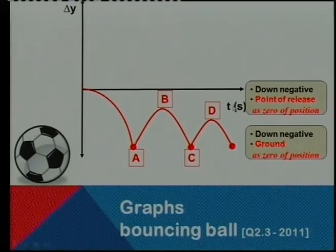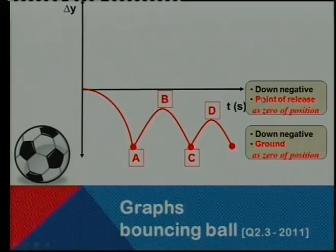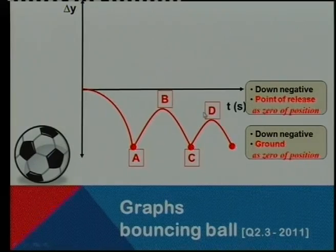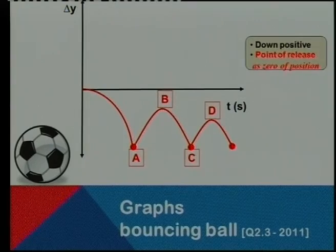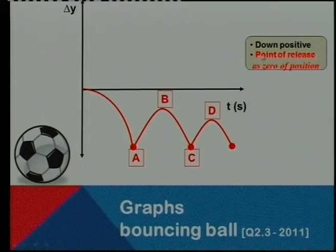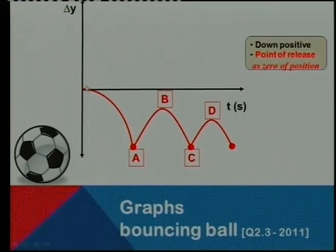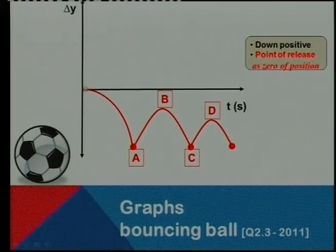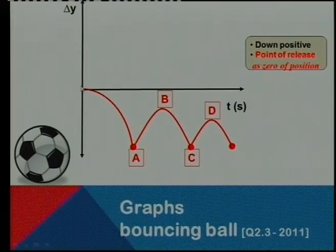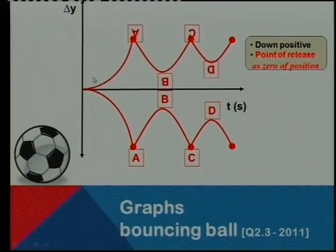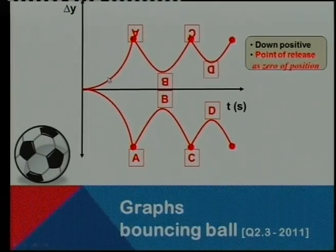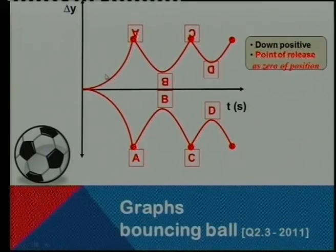Now, what will the graph look if I make down positive? I think you guessed it. Down positive and I still keep that point of release, that's where the ball was released as a zero position. Yes, that is what the graph would look like. And that is the one that you saw earlier on when we were referring to the question that was asked last year.